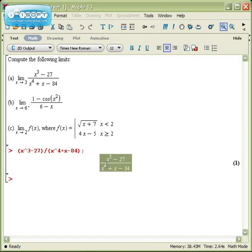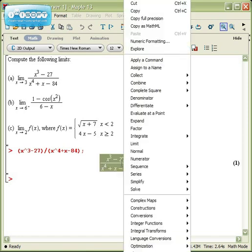And then like usual, we select the output, we right click, and we get a context menu. And there, right in the middle of the menu, is limit.